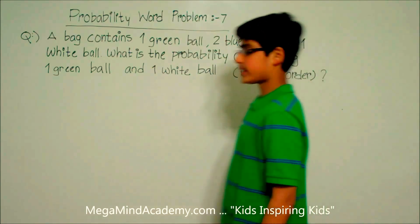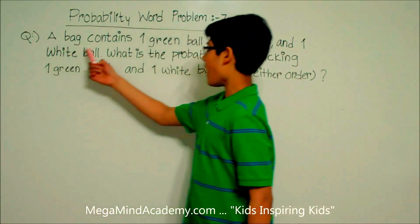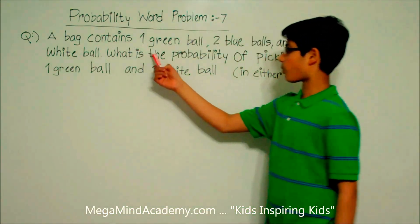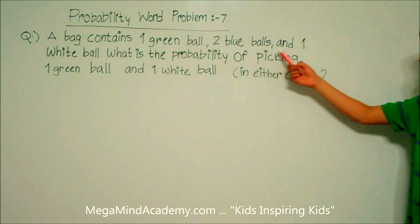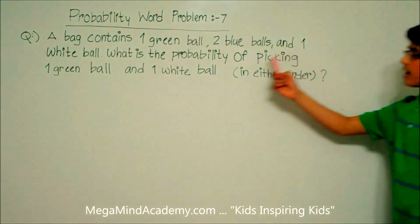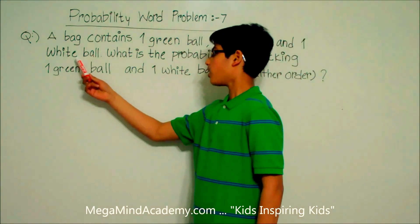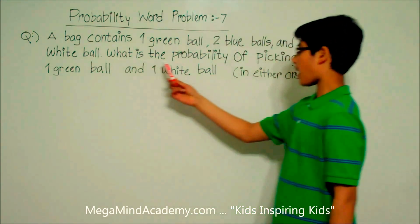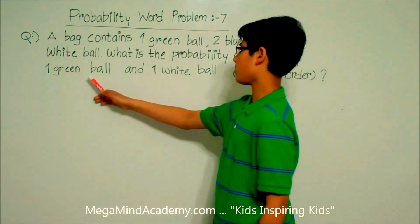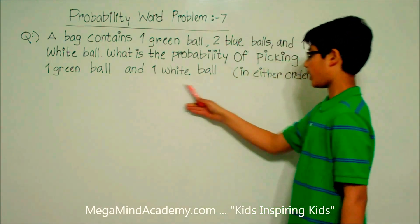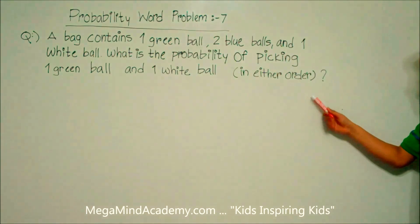Let's say we have a problem like a bag contains one green ball, two blue balls, and one white ball. What is the probability of picking one green ball and one white ball in either order?